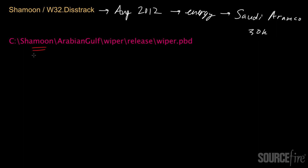What was particularly interesting about the string is that it contained the term 'wiper.' When researchers saw the term wiper together with the fact that Shamoon was designed to wipe systems clean, that became reminiscent of another attack also called wiper. That wiper was associated with the famous malware known as Flame, which was believed to have been developed by a nation state.